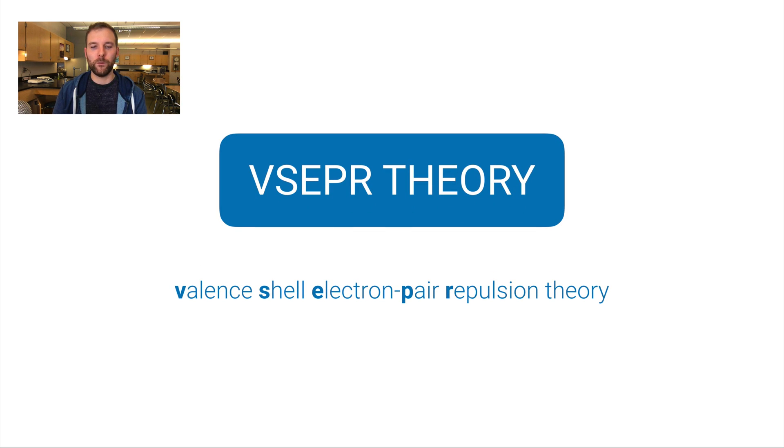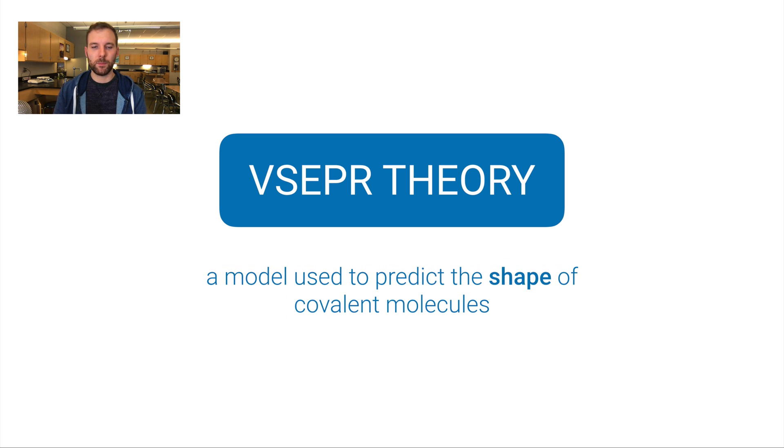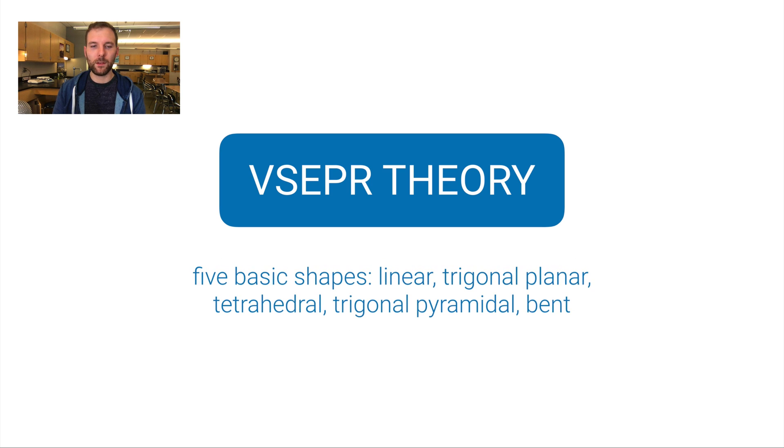VSEPR stands for Valence Shell Electron Pair Repulsion theory. Again, that idea that electrons are negative, they're going to repel from each other, and that's going to cause certain shapes to come out. It's pronounced VSEPR even though the S comes before the E—not my decision by the way. It's a model used to predict the shape of covalent molecules, so these are molecules that only have non-metals in them. And in this video we're going to talk about just the five basic shapes.